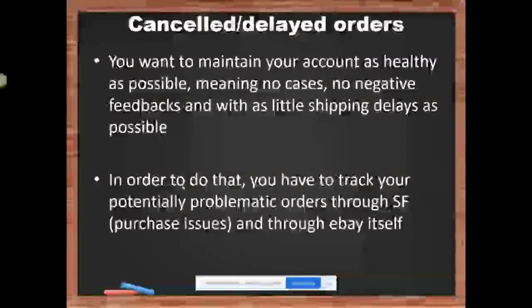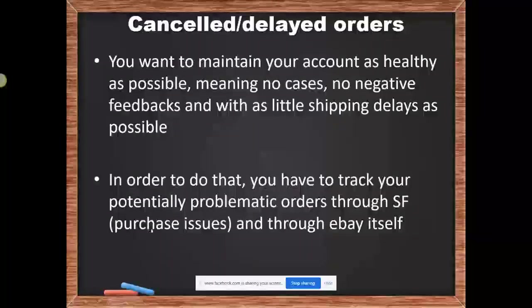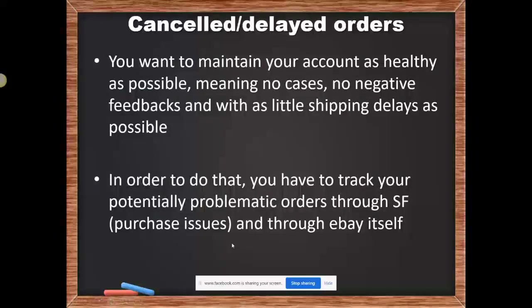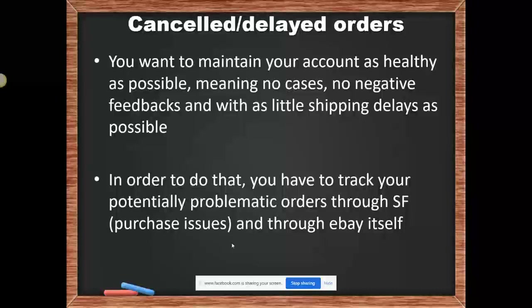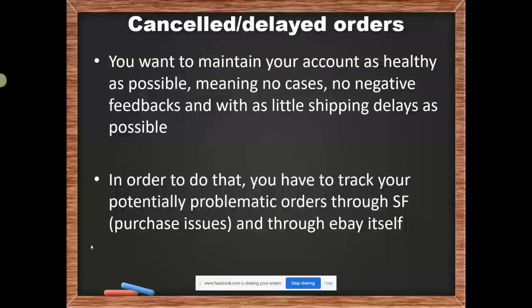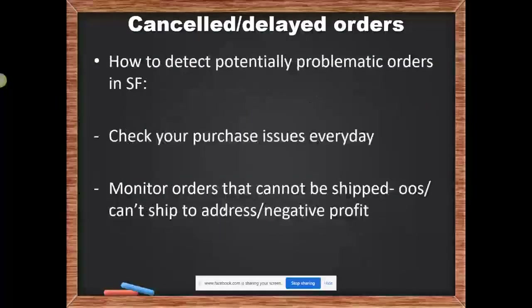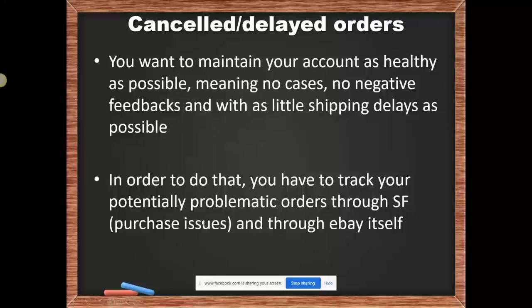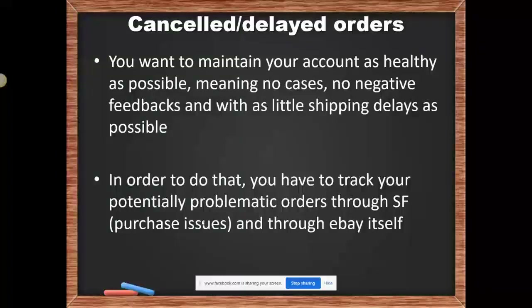So how do we do that? You have to track your potentially problematic orders through SaleFreaks — specifically through Purchase Issues — and through eBay itself. If you don't know what Purchase Issues are: when you log into your SaleFreaks account and go to your dashboard, you'll see under 'Alerts' right in front of your face, you have 'Purchase Issues.' These are orders that didn't get fulfilled automatically. I did a webinar solely on Purchase Issues a couple of weeks ago — you can check it out in this group.